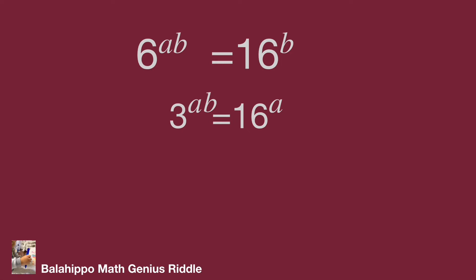Define 6 power of ab equal to 16 power of b as equation 1, and 3 power of ab equal to 16 power of a as equation 2. We have ab in these two equations. I'm going to generate a minus b. Use division: equation 1 over equation 2.